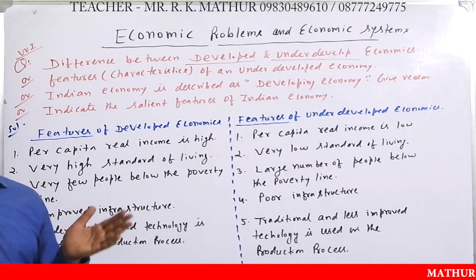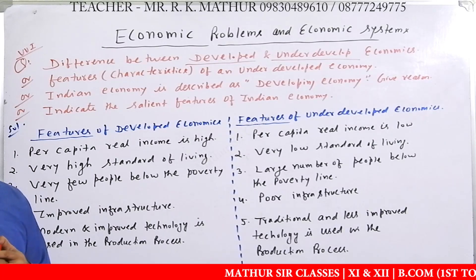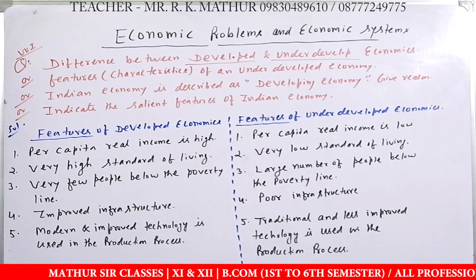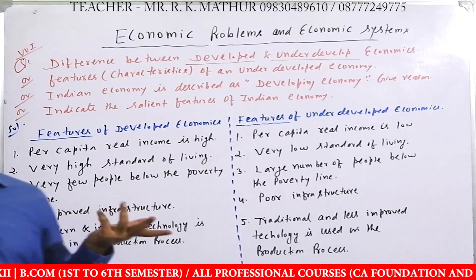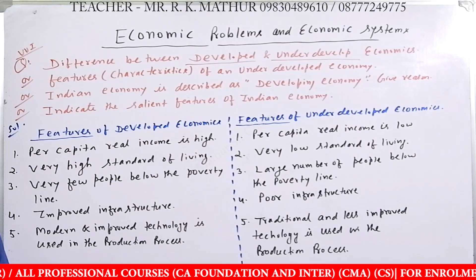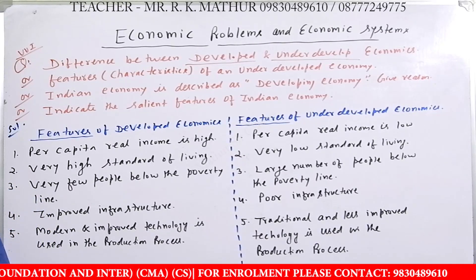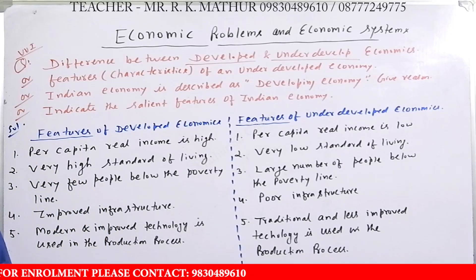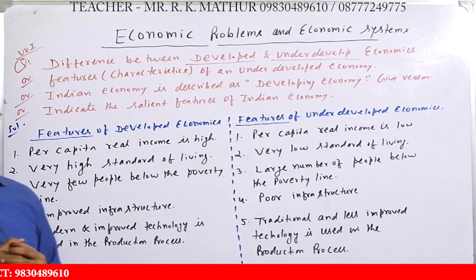Developed का मतलब क्या होता है — वहाँ पर जो infrastructure है, transportation है, बहुत fast है। India का transportation — आप कहीं भी जाते हैं, दस घंटा गाड़ी लेट है, चार घंटा गाड़ी लेट है। 60 की speed से ऊपर भागती नहीं, track ही उखड़ जाते हैं। जापान में 300-400 किलोमीटर की technology वो 2003 से enjoy कर रहे हैं। Developed country में सब कुछ fast है, आप fast means use करके एक जगह से दूसरी जगह जा सकते हैं।